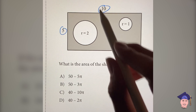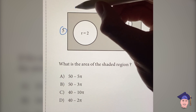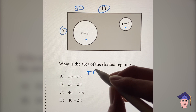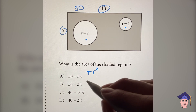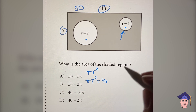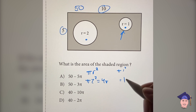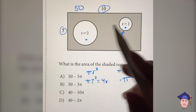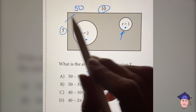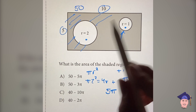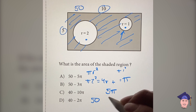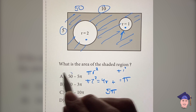What is the area of the shaded region? The first thing I'm going to do is find the area of this rectangle, which is just five times ten, which is 50. Now I'm going to find the area of each of these circles. The area of any circle is pi r squared. Since r is two, this is pi times two squared, which is four pi. And the area of this one is pi times one squared, which is just pi. The area of both circles is four pi plus pi, which is five pi. So the area of the shaded region is the area of the rectangle minus the area of the circles: 50 minus five pi. So the answer is A.